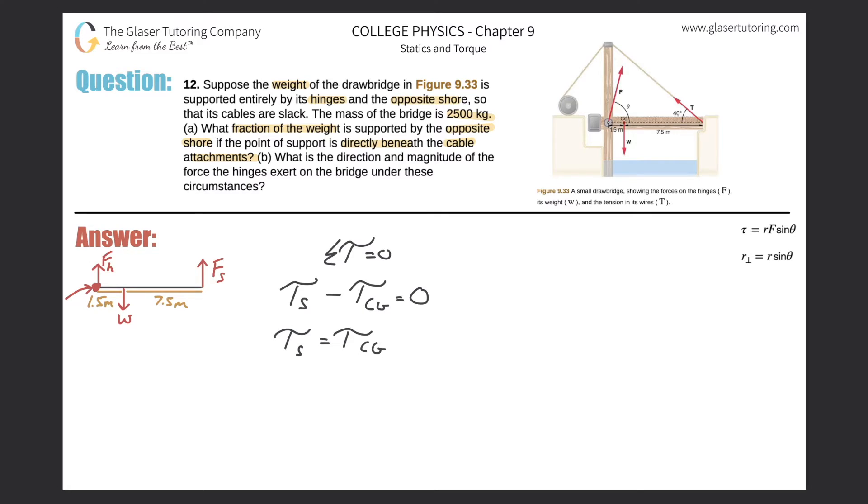Now let's expand on those two terms. So here we have r at the shore, f shore, sine of the lever arm relative to the force at the shore will be equal to r center of gravity, f center of gravity, multiplied then by sine theta at the center of gravity.